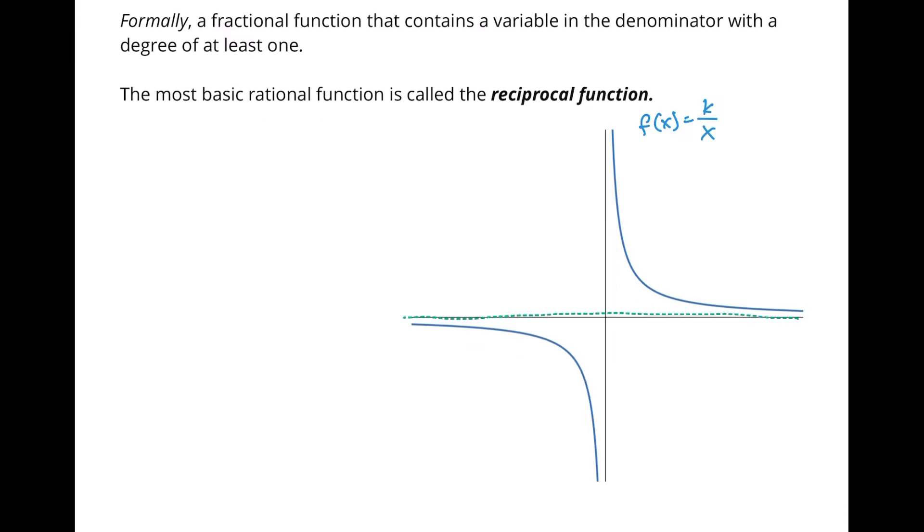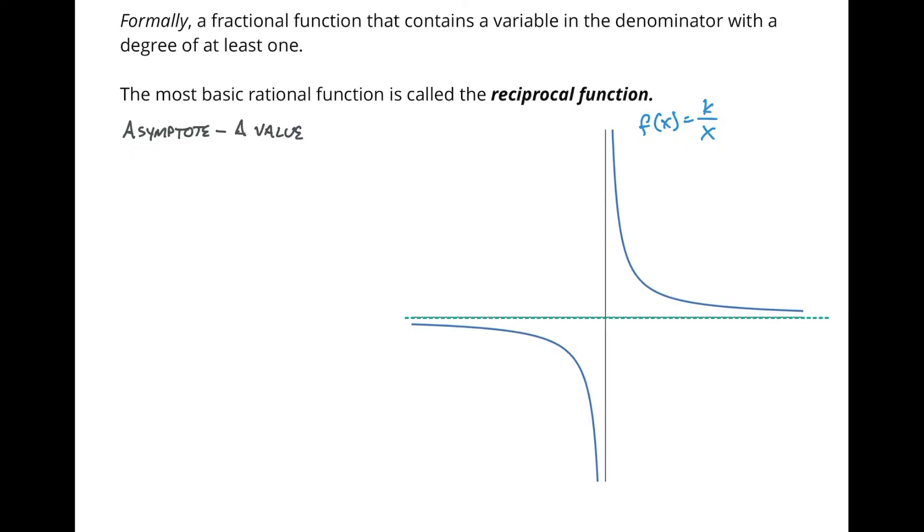This is called an asymptote. So I'm going to put a dotted line on here. I put a green dotted line on there. But an asymptote is a line. Asymptote, let's put a definition up here. In general, now this isn't technically the formal definition of it. An asymptote is a value that the extremes of a function approach but never reach.